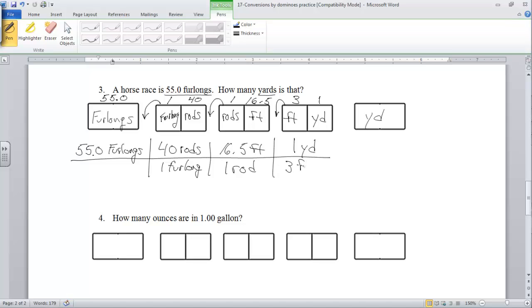Then we have 16.5 feet over one rod, and then we have one yard over three feet. Then what you're going to do is multiply across on the top, multiply across on the bottom. Doing that we're going to come up with on top 36,300, and the units for that you can see are going to be furlongs, rods, feet, and yards.